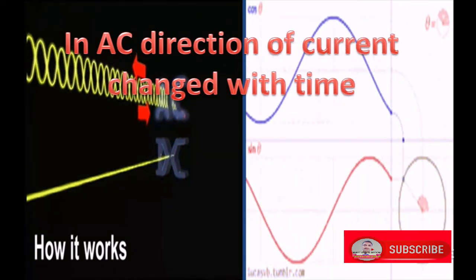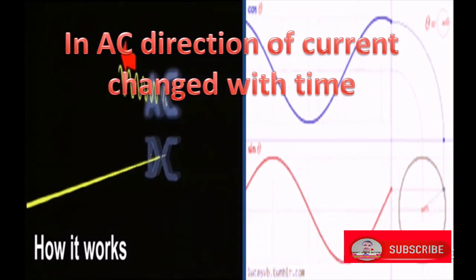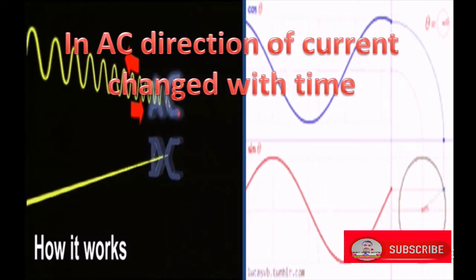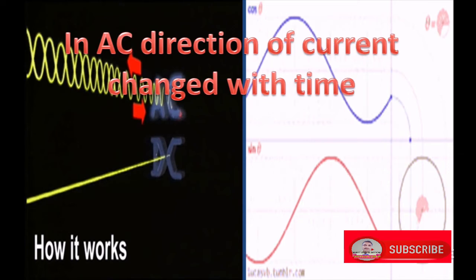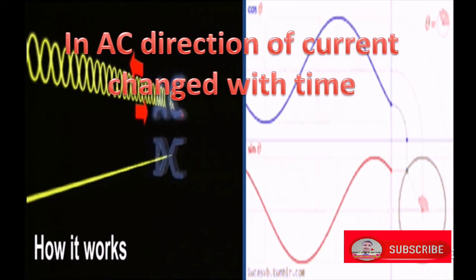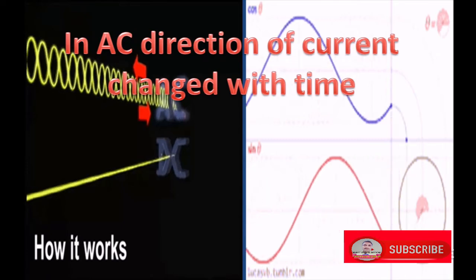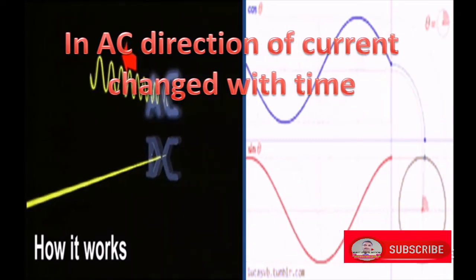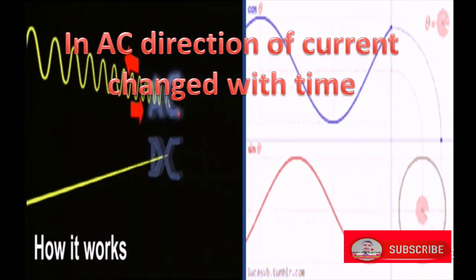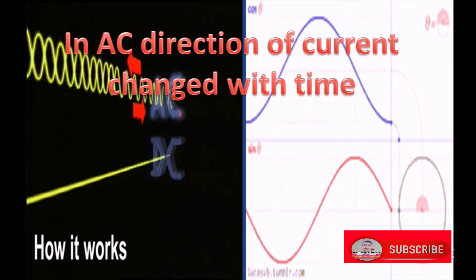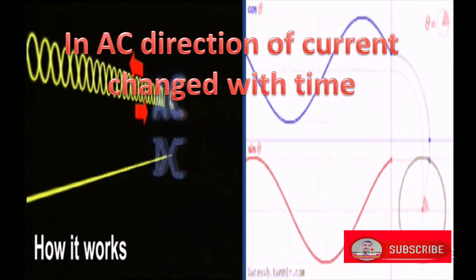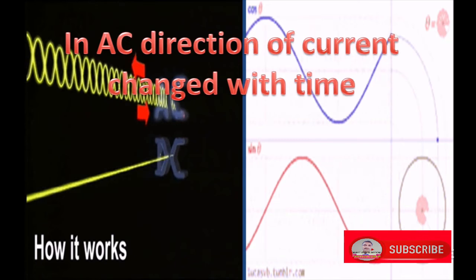In AC, polarity is non-zero. When we plot the graph between current and time, we obtain flow of current in different directions in the form of a wave, from phase to neutral or neutral to phase, each forming a wave through the conductor.